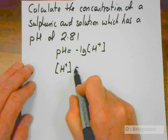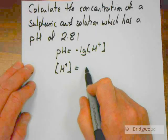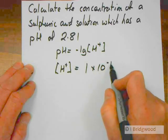Well, we need the equation, concentration of hydrogen ions is equal to 1 times 10 to the minus pH.